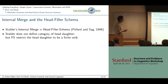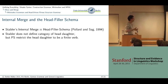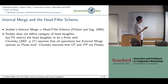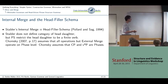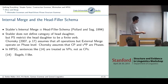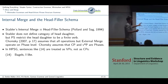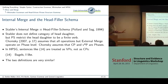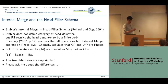Stabler's internal merge is basically the head-filler schema. Stabler does not define the category of the mother in this schema, but if we look at Chomsky's work, we see that everything except external merge operates on the phase level — Chomsky says CP and VP are phases. What Pollard and Sachs call a finite VP is what Chomsky calls a CP, so that's the equivalent in both theories. The definitions are very similar. You can ask me about the differences in the question period.